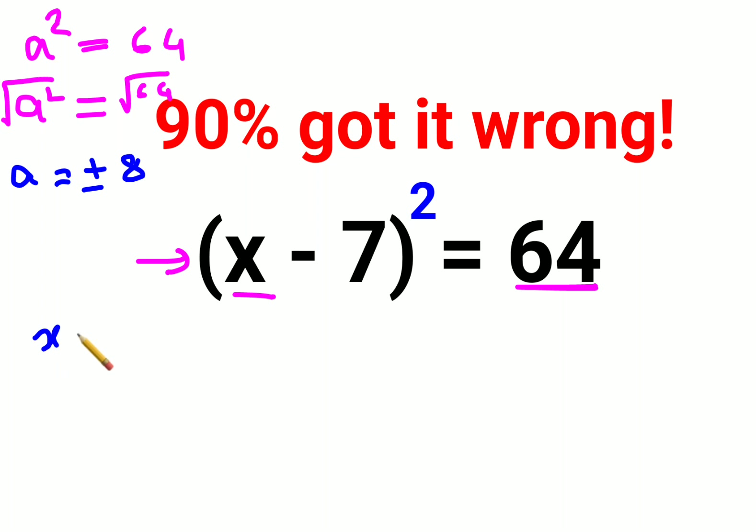So here also I can say x - 7, when you take square root on both sides, either it is +8 or I can say x - 7 = -8.